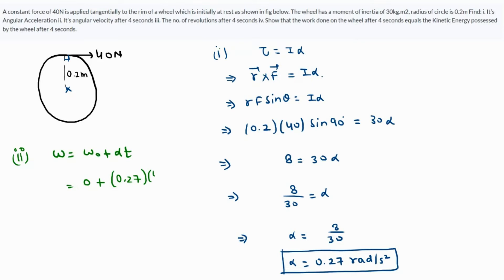Time is 4 seconds as given in the question, so all we have to do is multiply our angular acceleration by 4, which will come out as 1.07 radian per second.